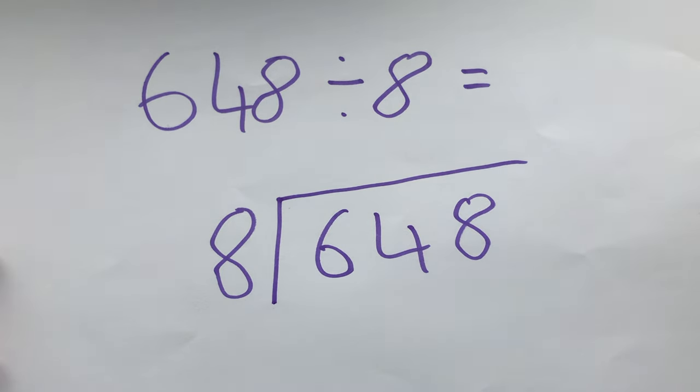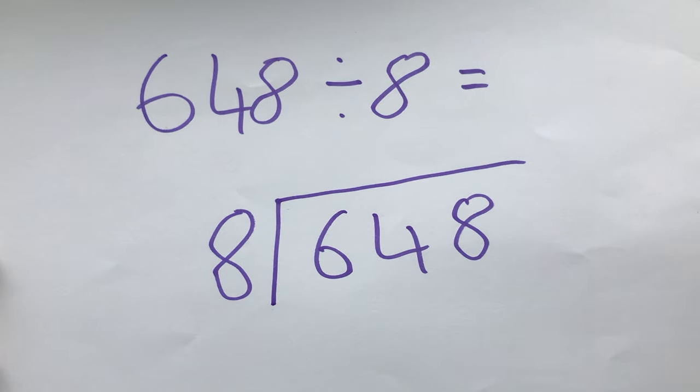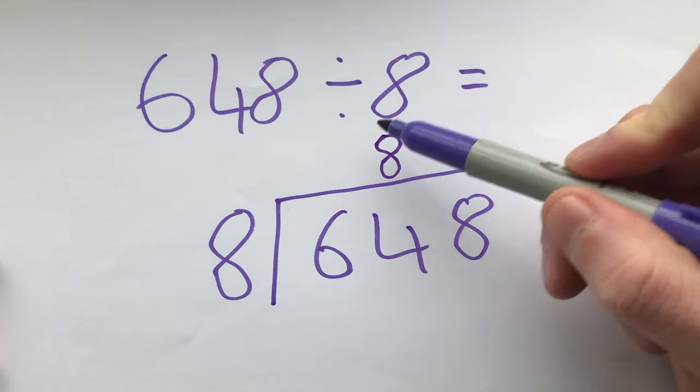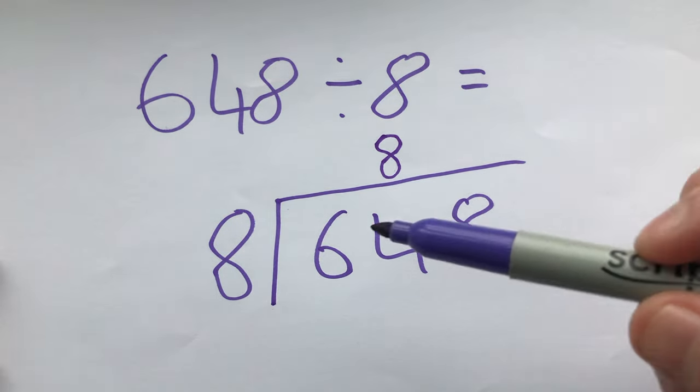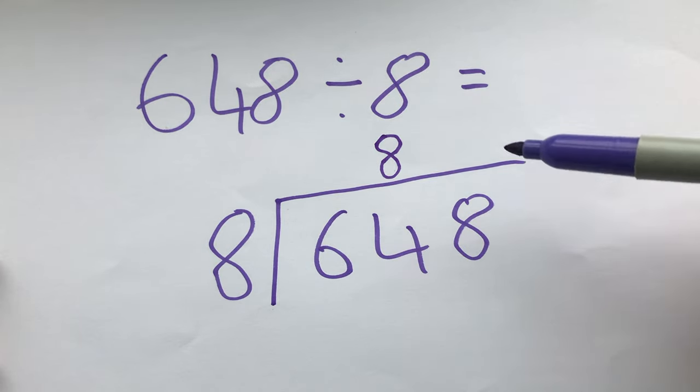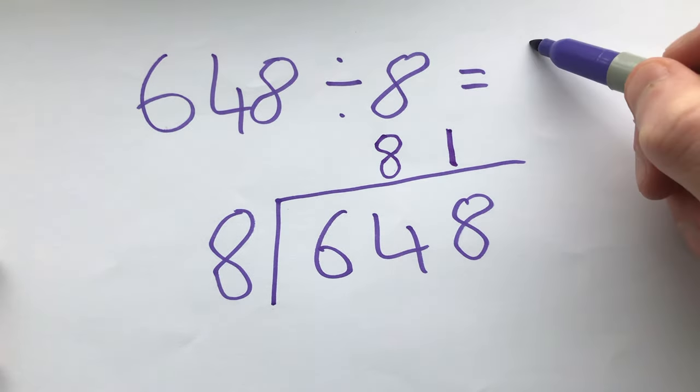How many eights go into 64? If you know your 8 times table, there are 8 eights in 64. And finally we go how many eights are in 8 and that's 1. So our answer is 81.